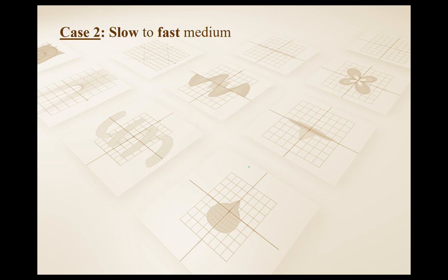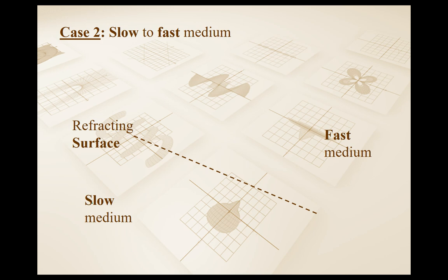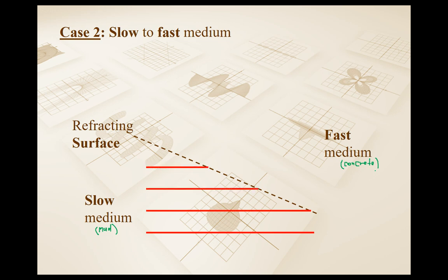The opposite case: going from a slow to a fast medium. The marching band starts in the mud and eventually gets back onto the concrete. The marching band starts moving upward — the dashed line represents what would happen with no boundary change. When marching onto the concrete, the person who gets there first can walk faster, so their position on the wave front presses forward. The person at the very end of the line first reaches the concrete and gets much further ahead than someone who had only a short time on the concrete.